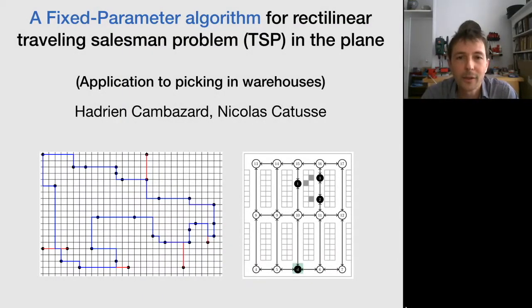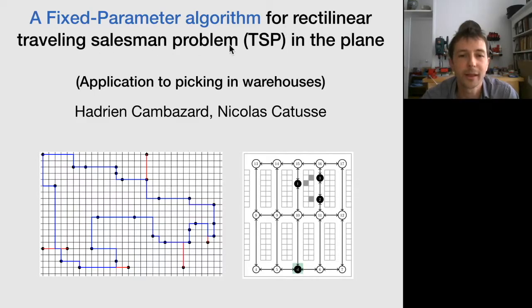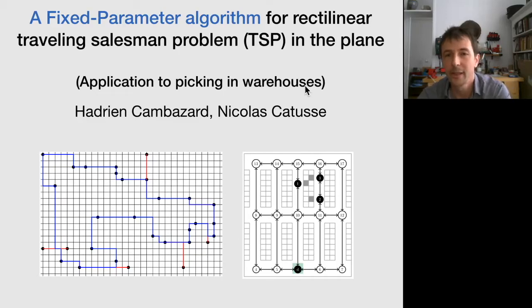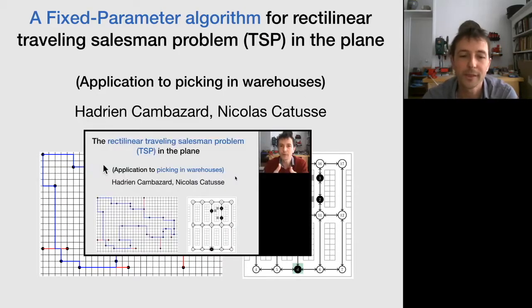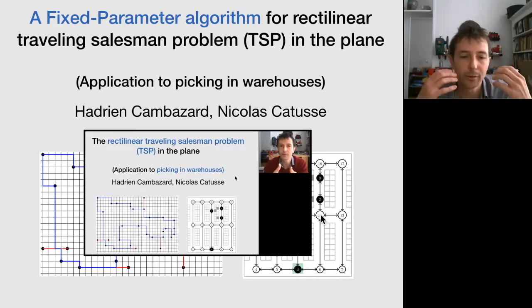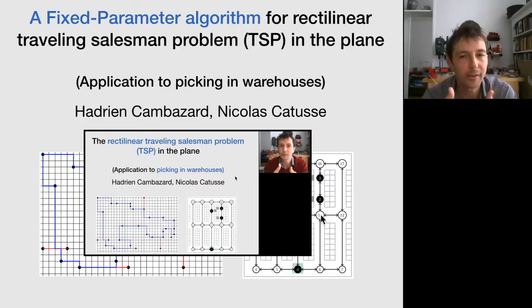This is the second part of our quick class about how to efficiently solve the rectilinear traveling salesman problem, or the picking problem in warehouses. Make sure you have seen the introductory video, which tells you everything about the problem itself and how it relates to a variety of traveling salesman problems.